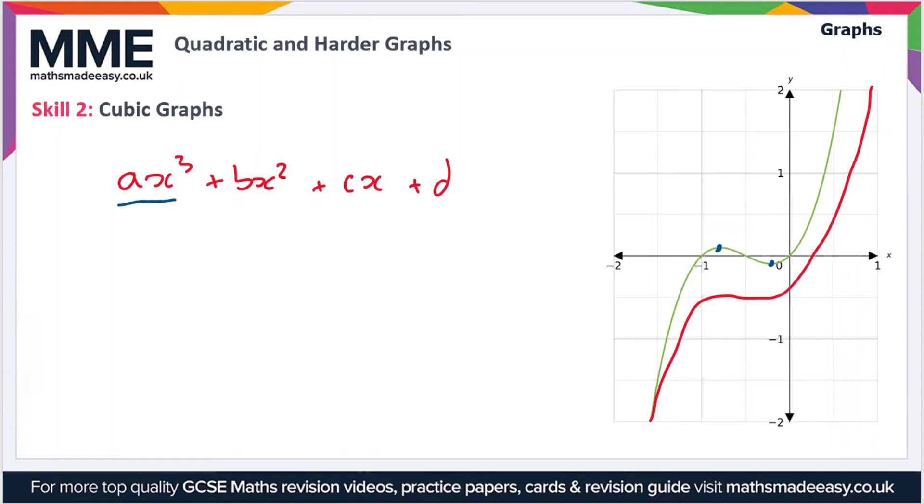In terms of plotting a graph—this applies to quadratics as well—the best way to do it is to use a table of values. Your table might look something like this: you have x on the top and y on the bottom, and you just pick some x points that you want to plot. Here on the graph on the right, we have x values going from -2 to 1.